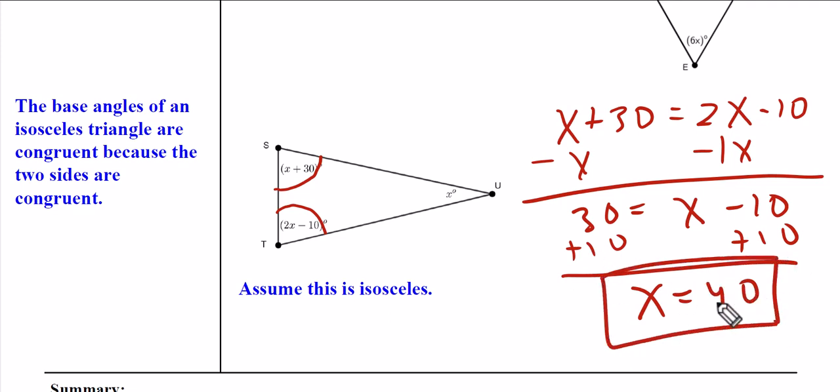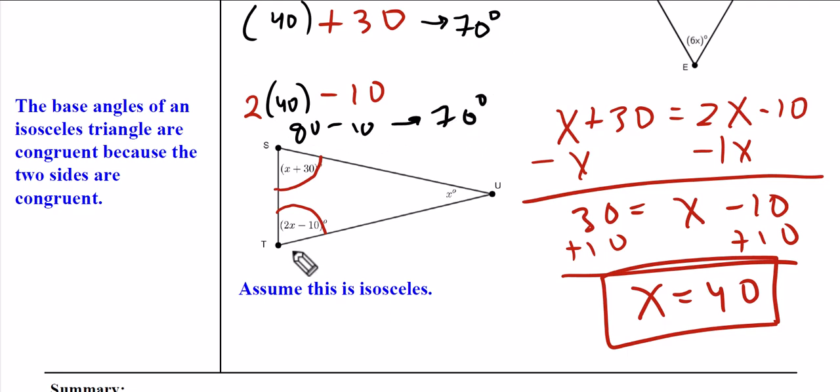X is 40, so that means I need to go ahead with my two angles and I can substitute into them the 40 that I just found. This 40 plus 30 gives me 70 degrees. This is 80 minus 10 which is 70 degrees. So this is 70 degrees, this is 70 degrees.